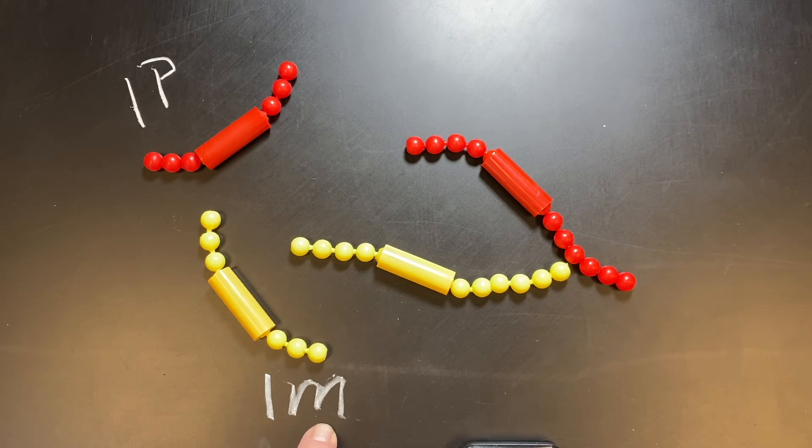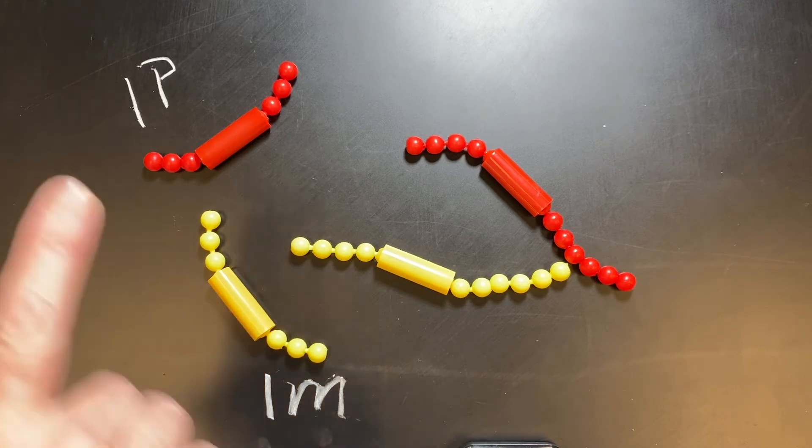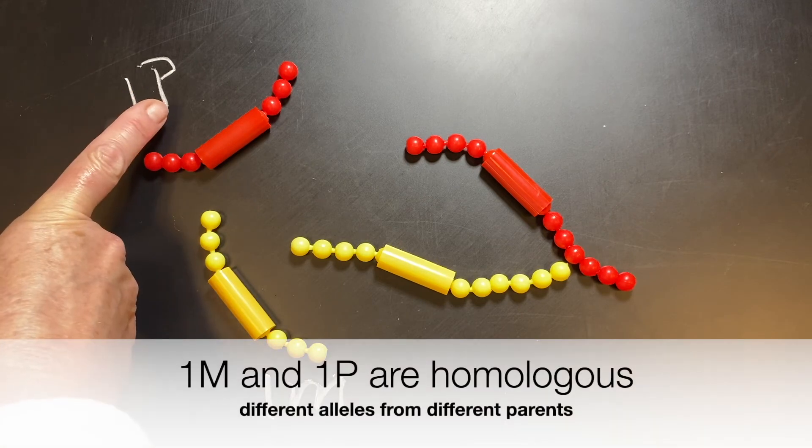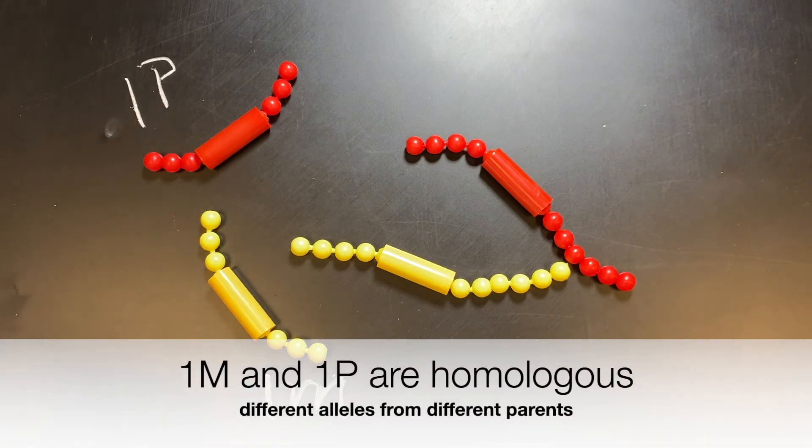1M came from your mom, it's the maternal chromosome, and 1P came from your pop. It's the paternal chromosome. 1M and 1P are homologous to each other.